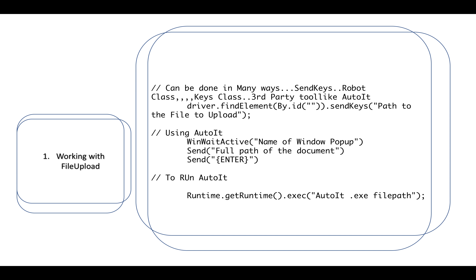How to work with file upload: multiple ways — sendKeys() by providing the file path, Robot class, Keys class, or a third-party tool like AutoIt. With sendKeys(), just call sendKeys() with the file path. With AutoIt: use WinWaitActive() with the popup window name, send the document path, then send Enter with curly braces. To run the AutoIt script, use Runtime.getRuntime().exec() on the AutoIt .exe file.